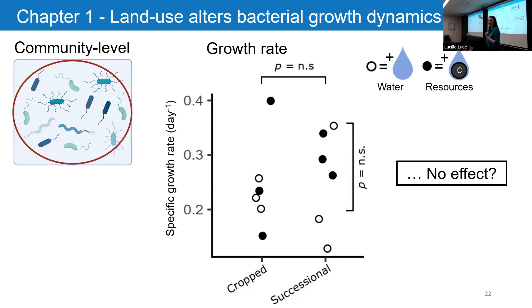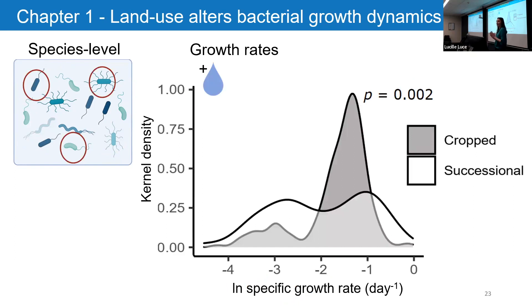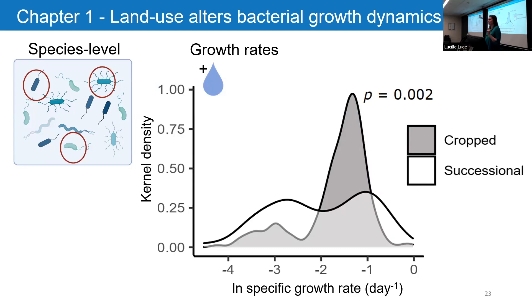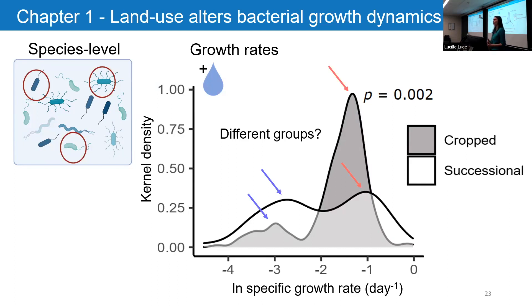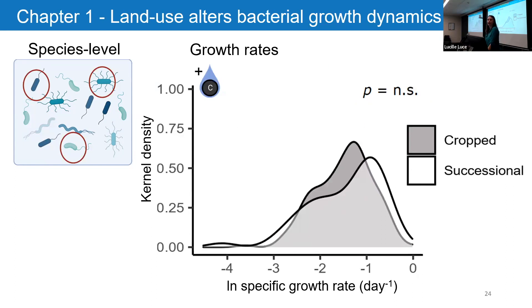I didn't give up there. I decided to look at the species-level data. On the x-axis we have growth rates, and on the y-axis something called kernel density — a fancy way of showing frequency; a higher peak means more individuals growing at that growth rate. Looking at the water treatment, these are not normal distributions, and the distributions look different between soils. Something that stuck out was what appears to be two subpopulations within these distributions — a slower group and a faster group. When we look at the carbon-added data, these distributions seem to shift and look more similar to one another, but distinct groups still persist within the whole community.